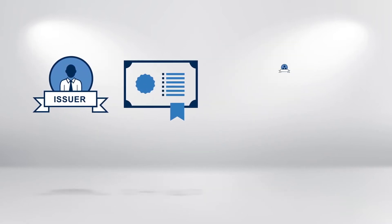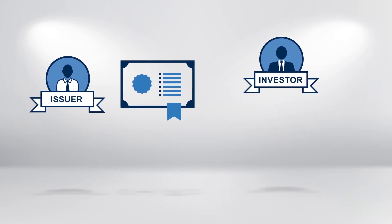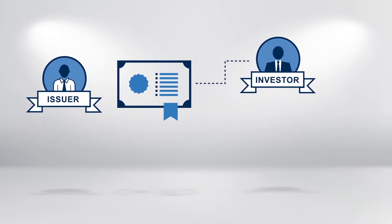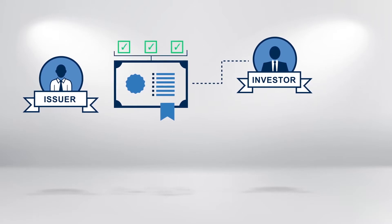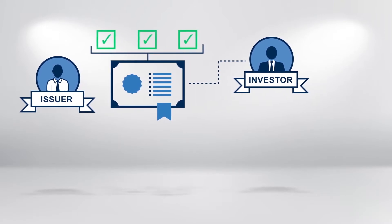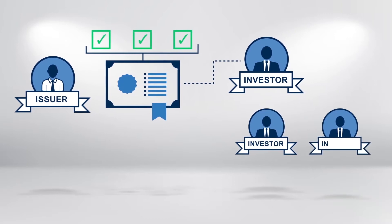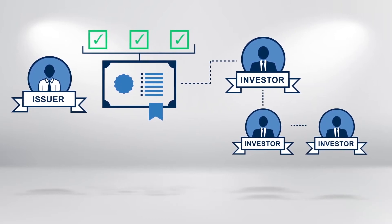A key difference between an IOU between two individuals and a bond is that the bond is transferable and has some standardized definitions and terminologies. These enable the bond to be traded easily between investors after it's been issued.